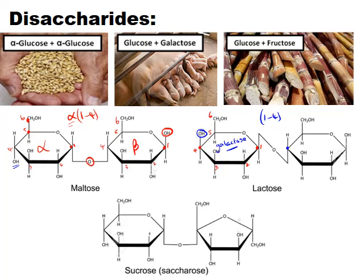In lactose, the glucose monomer on the right has the OH group above carbon one, confirming it's beta glucose. Lactose is made in the milk of mammalian females to feed their offspring. Milk contains beneficial molecules like antibodies and hormones, and it also has high levels of lactose, which is the major source of energy for these rapidly developing offspring.